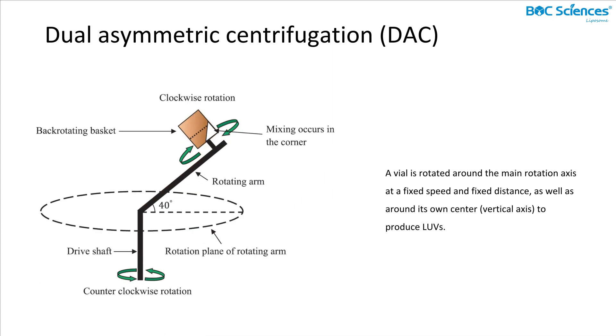The fourth preparation method is dual asymmetric centrifugation. In using this method, a vial is rotated around the main rotation axis at a fixed speed and fixed distance, as well as around its own center to afford large unilamellar vesicles.